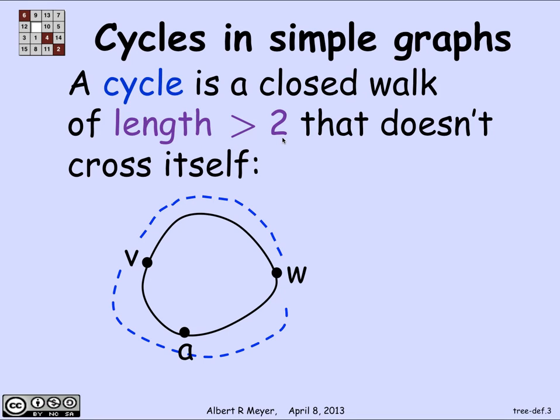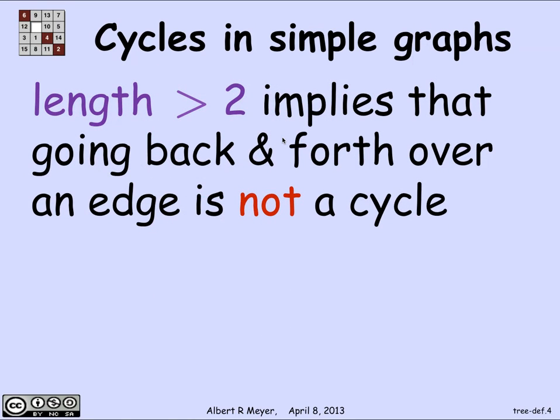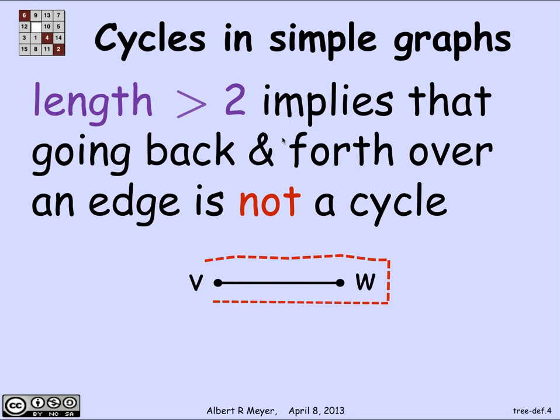The length greater than 2 is the key difference between the definition of cycle in simple graphs versus directed graphs. In a directed graph, a self-loop of length 1 is an interesting and important kind of cycle, but we forbid them in simple graphs. There's no avoiding a cycle of length 2, since you can always go back and forth across an edge — that's not interesting, so we don't consider it a cycle. A cycle must be of length greater than 2.